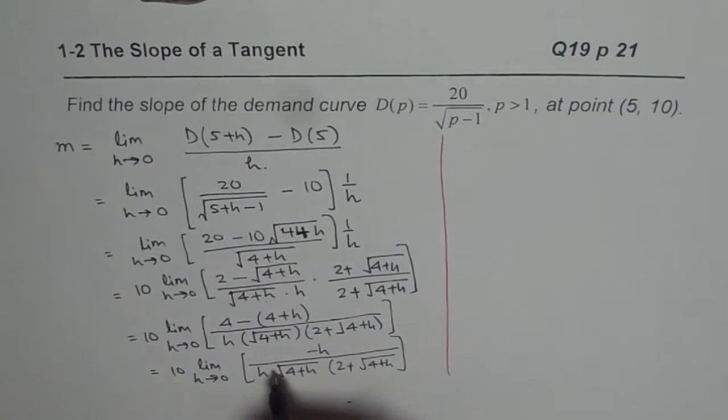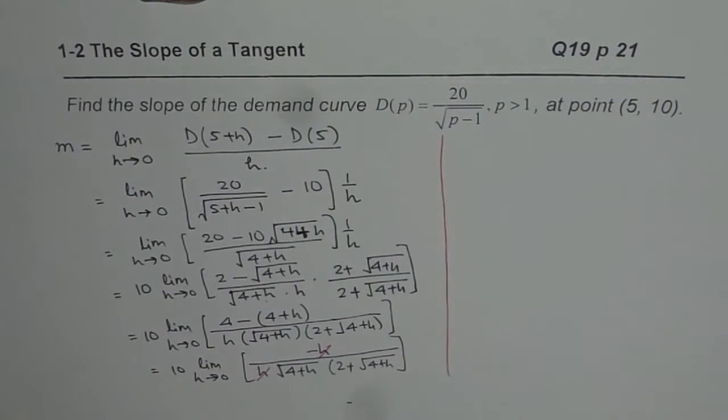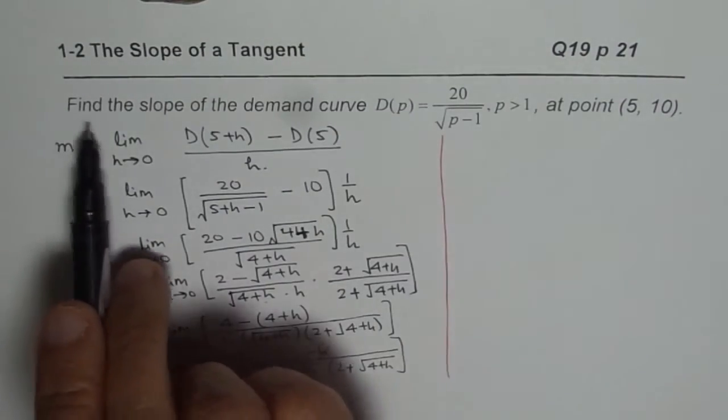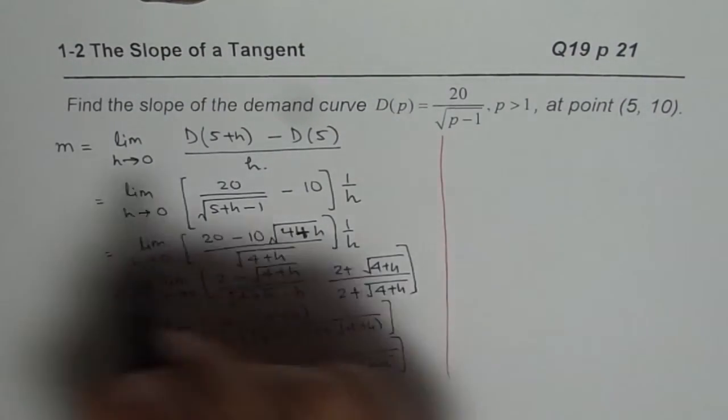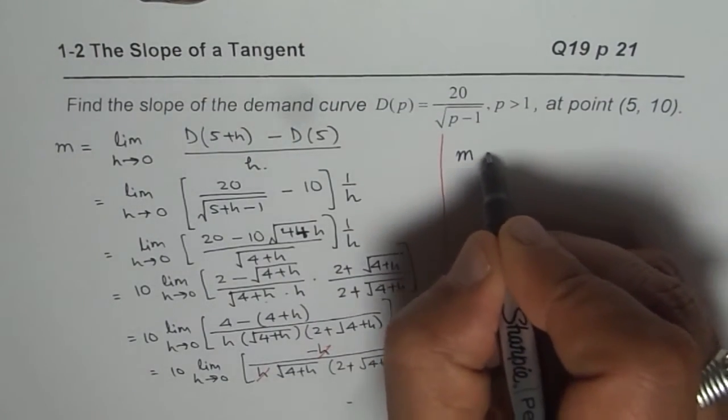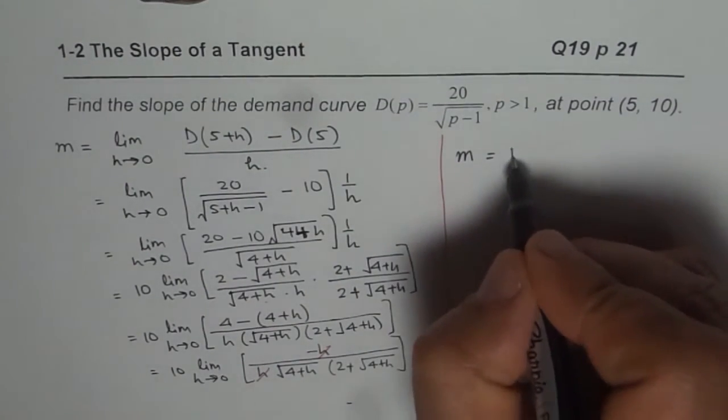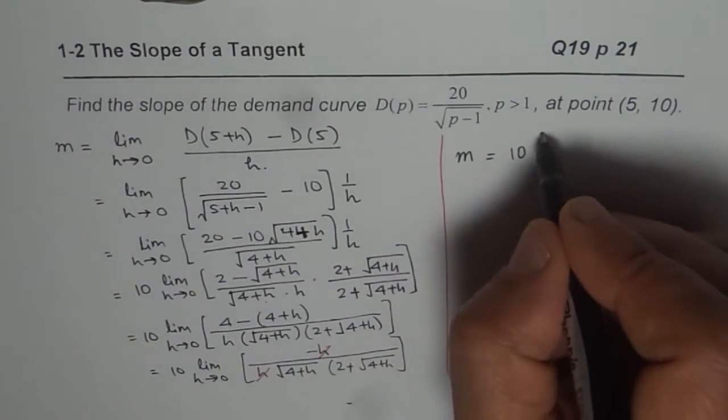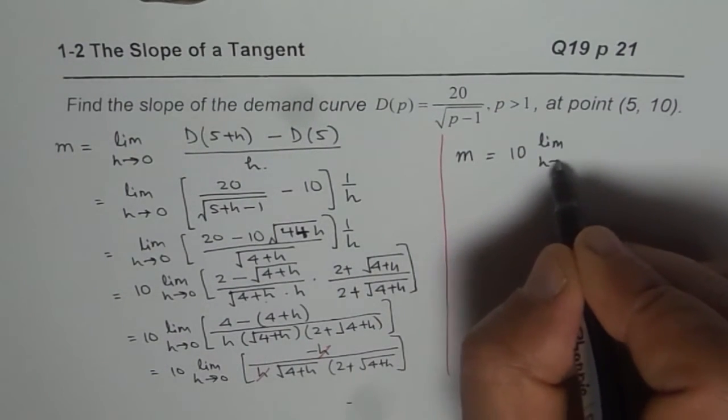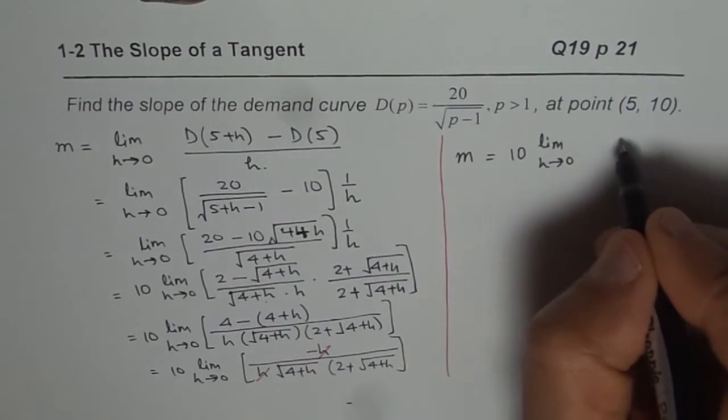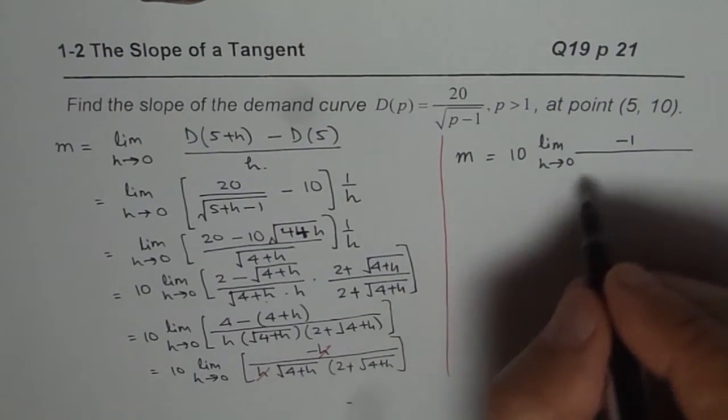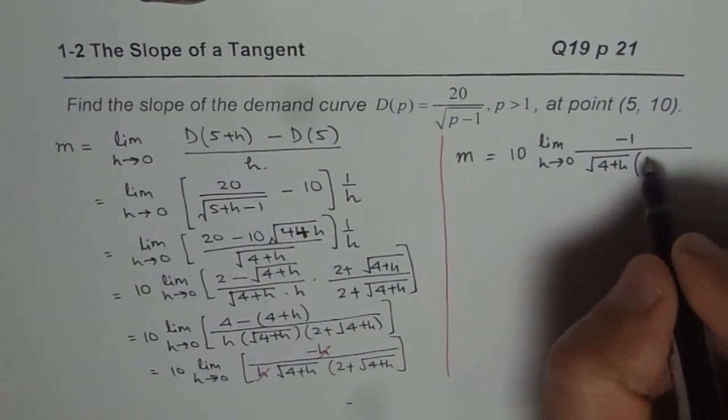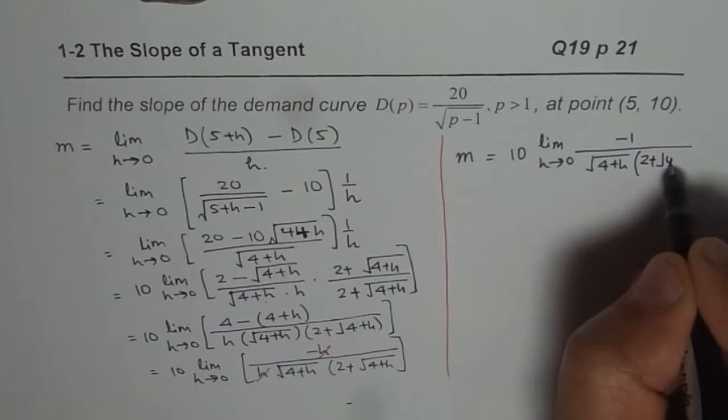Now, as we can clearly see, H and H can be cancelled. So what we really get here is the slope. We need to find the slope at this point. Slope M is equal to 10 limit. Now, let me rewrite this and then I will substitute. H approaches 0. Since we cancel, we get minus 1 over square root of 4 plus H times 2 plus square root of 4 plus H.